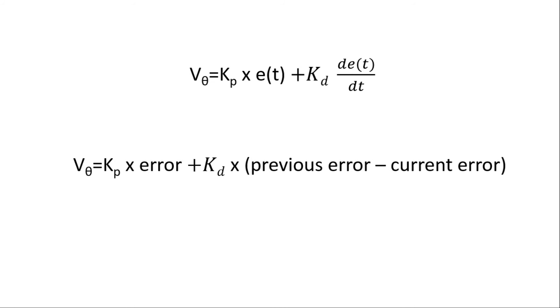Hence, we implement this as a tunable variable Kp times the error plus another tunable variable Kd times the difference in the previous error and the current error. Use this value to increment or decrement your steering angles.